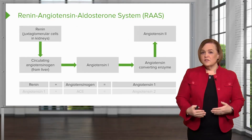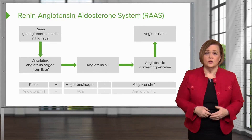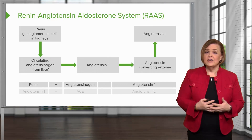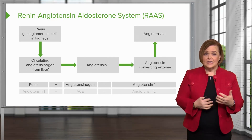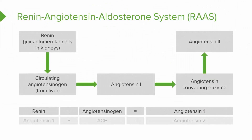Why are we going over this over and over again? Because repetition really helps your brain remember things — it likes to see things that are familiar. So: renin plus angiotensinogen equals angiotensin 1. Then angiotensin 1 connects with ACE and you end up with angiotensin 2.